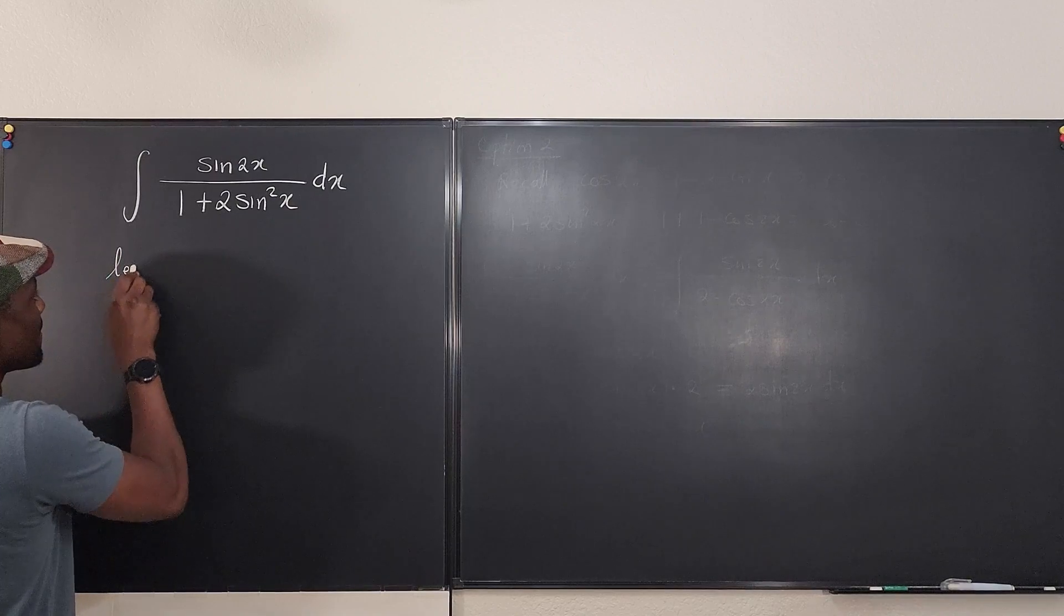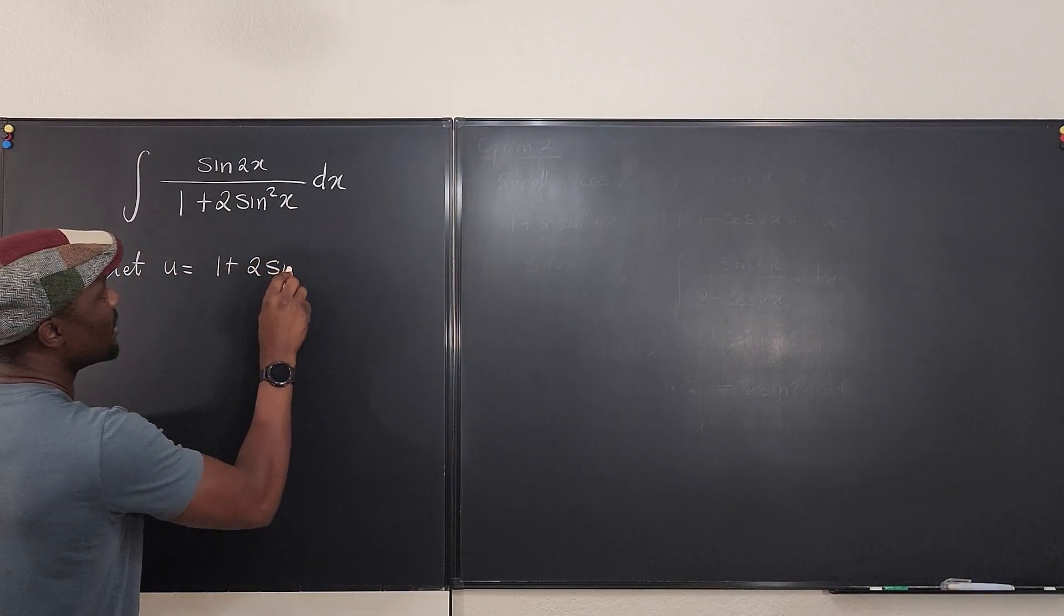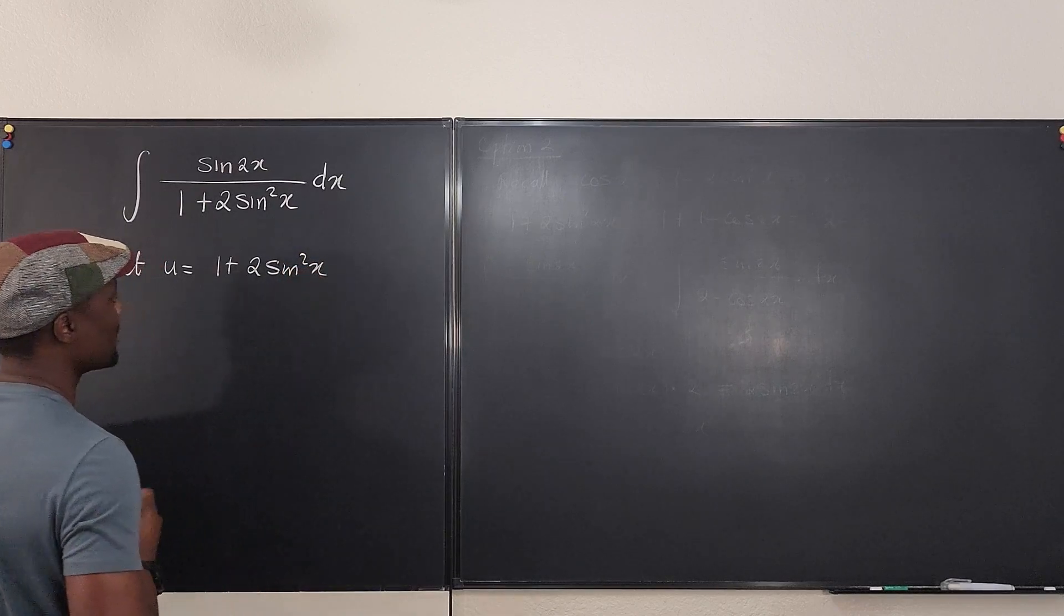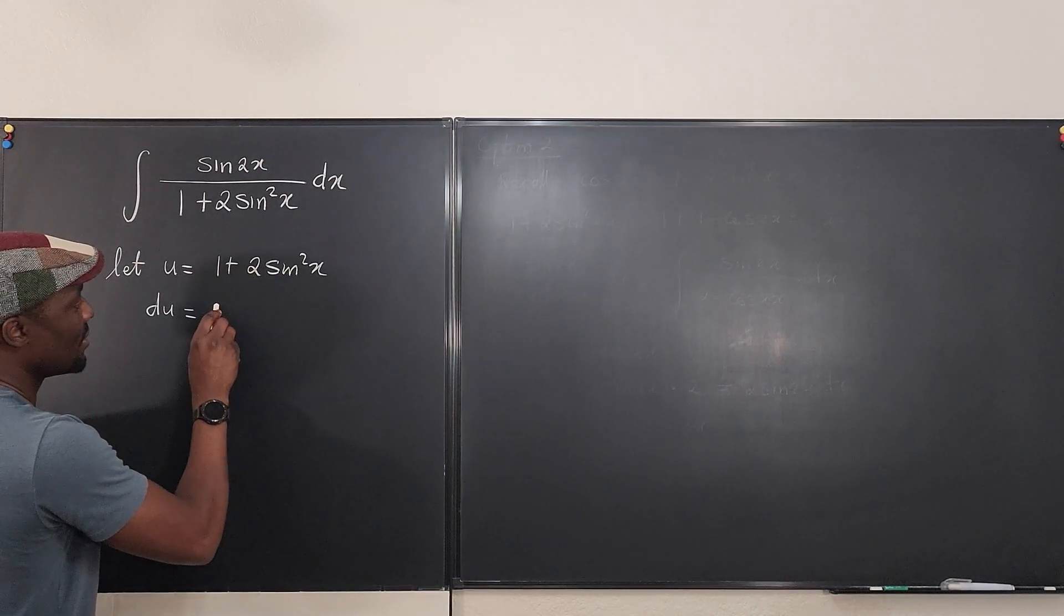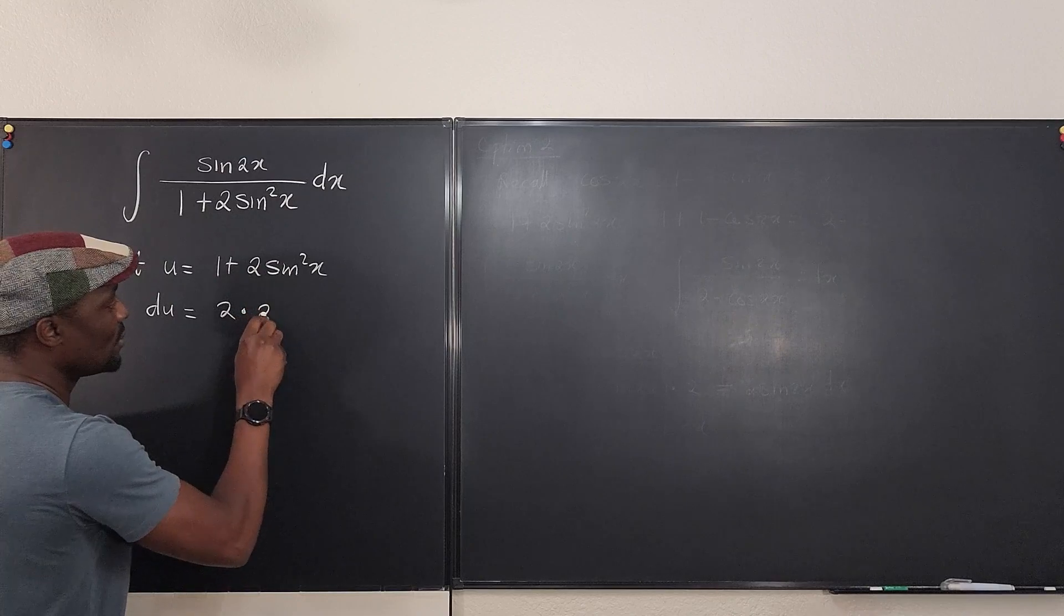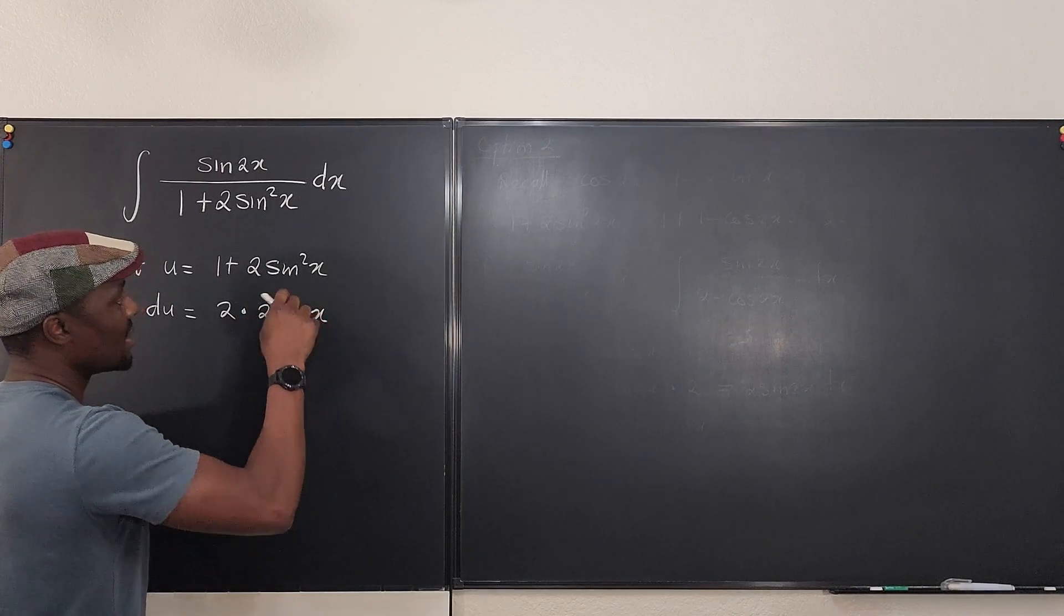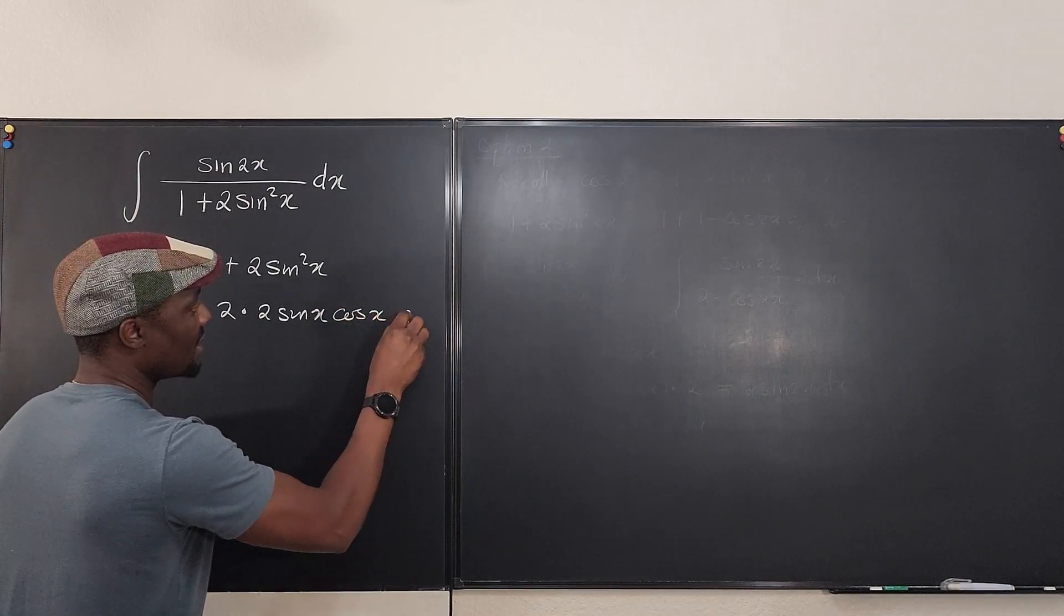We're going to say, let U be equal to 1 plus 2 sine squared x. If I take the derivative of U, this is 0, and this is going to be 2 times the derivative of sine squared x is going to be 2 sine x times the inside. You apply the chain rule, cosine x dx.